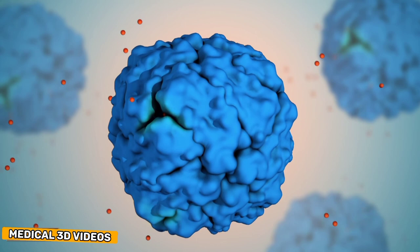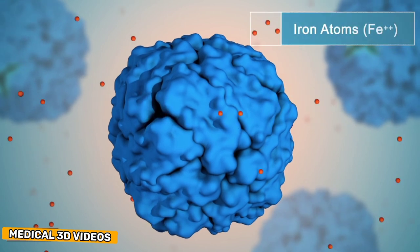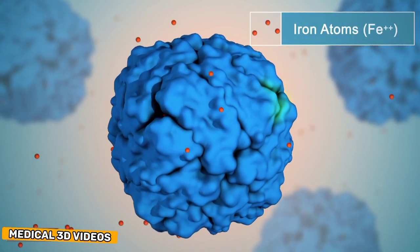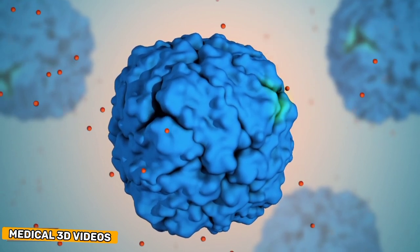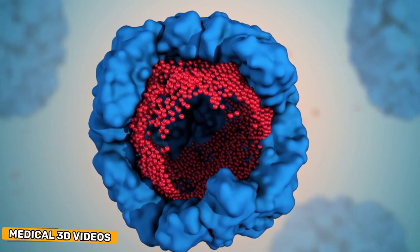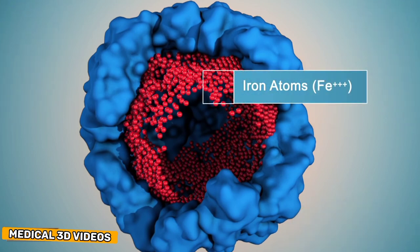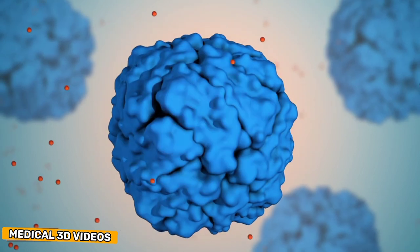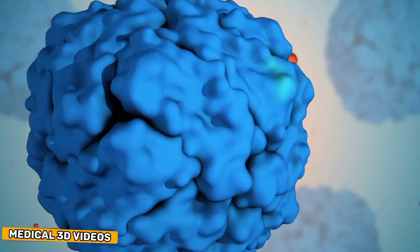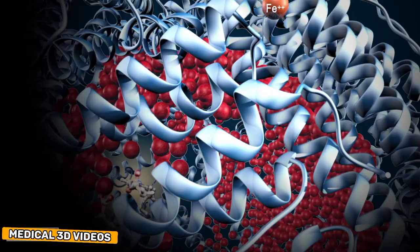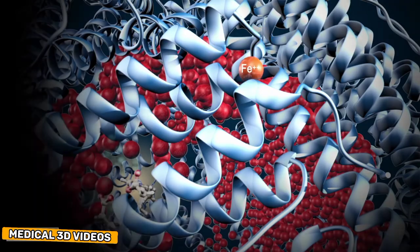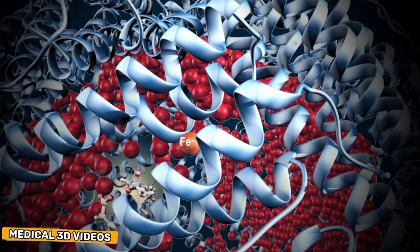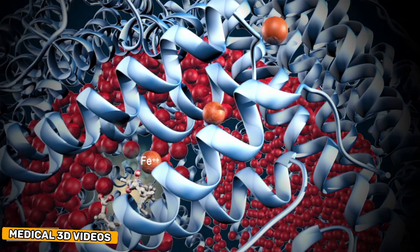Ferritin is a spherical protein with channels that allow iron atoms to enter and exit depending upon an organism's needs. On the inside, ferritin forms a hollow space with iron atoms attached to the inner wall. Ferritin stores iron in a non-toxic form.